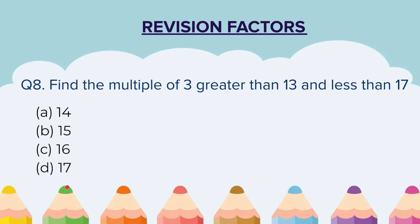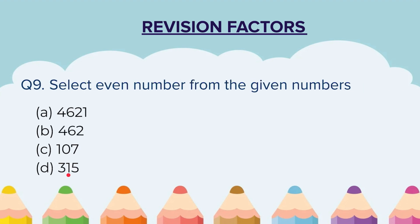Question 8: Find the multiple of 3 greater than 13 and less than 17. Options are given — please be careful in selecting your answer. Question 9: Select the even number from the given numbers. 4 numbers are given and only one number is even — you have to select that number.